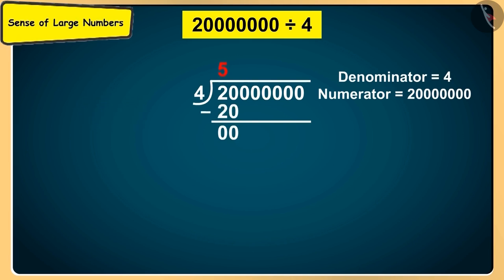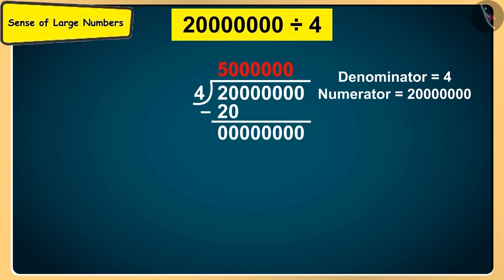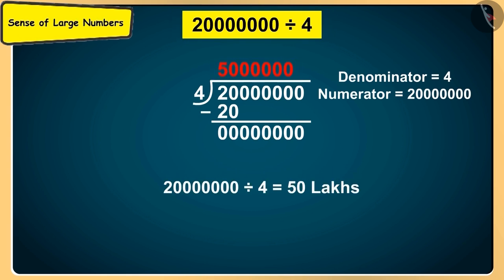4 fives are 20. And there are 6 zeros in the numerator. When we multiply 4 with 0, then we get 0. So, our quotient will be something like this. So, 1 fourth of 2 crore will be 50 lakh. That's great, Sonu. You got the answer in a jiffy.